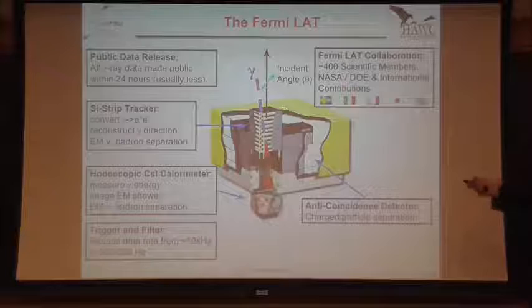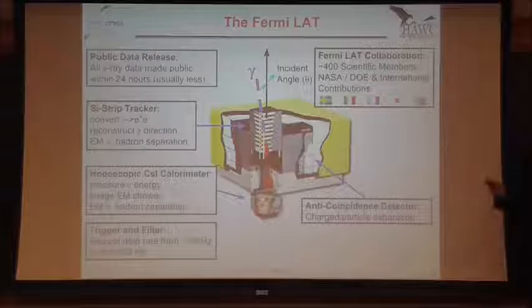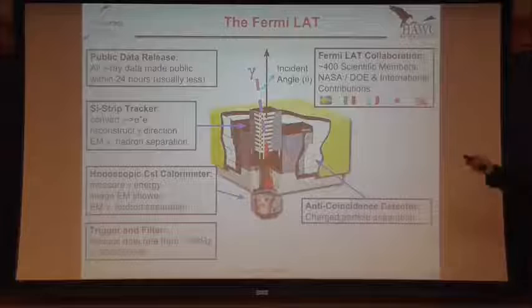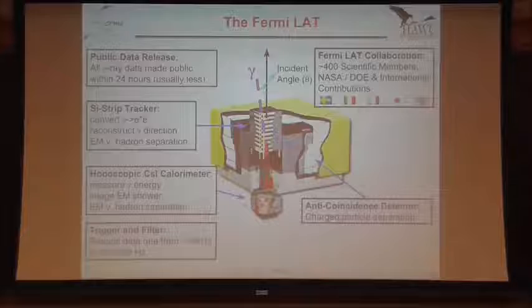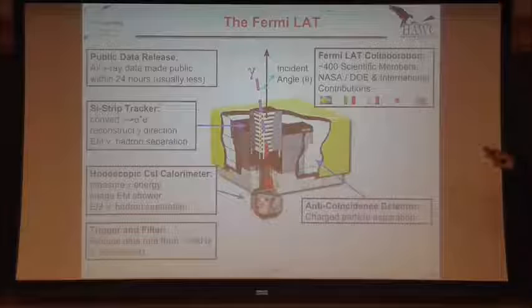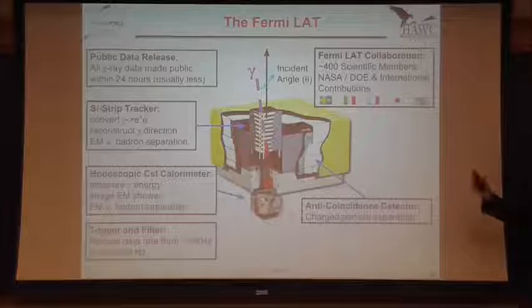The ACD is a big heavy lifter for gamma-hadron separation. Something cool about this ACD that was better than our predecessor EGRET is that it's tiled. EGRET just had one big monolithic ACD, and that causes self-vetoing. All of our Fermi data is public, so if you're interested in studying GeV gamma rays, you can get the data and analyze it — we have software for everyone. The collaboration that maintains the instrument and does analysis has about 400 members.